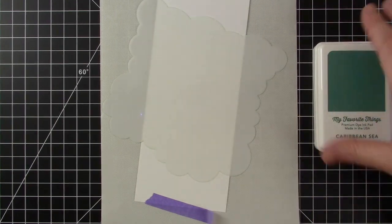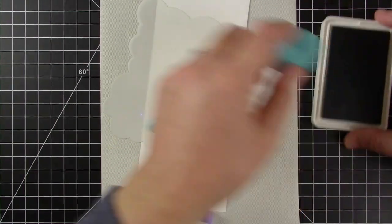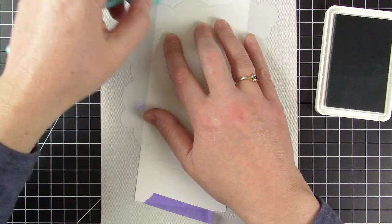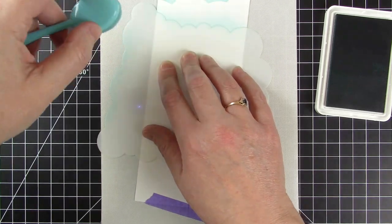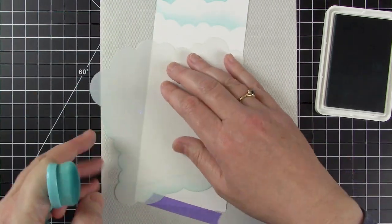So now I'm going to get the background ready. I have a white panel that is cut to three and a half by eight and a half and I'm using Caribbean Sea ink and the cloud stencil to make a cloud background.